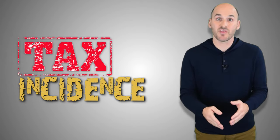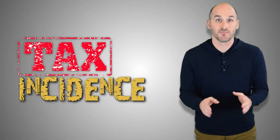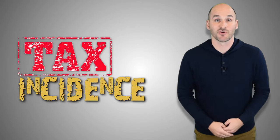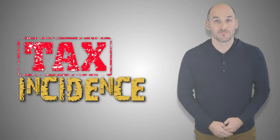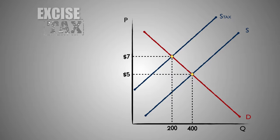So how do we discover the answers to all of our tax incidence questions? No worries, I'll show you. Let's go back to the market for Good C. After a $4 per unit excise tax was levied on firms, the supply of Good C decreased, leading to an increase in the price of Good C to $7 and a decrease in the output of Good C to 200 units.